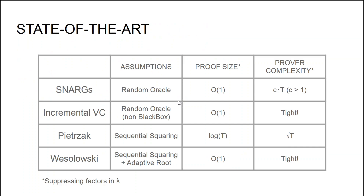I'm now going to comment on the state of the art of VDF constructions prior to our work. The first construction is a VDF from succinct non-interactive arguments, SNARK in short. Given a SNARK, one can construct a VDF that is unconditionally secure in the random oracle model with optimal proof size — constant size proof in the random oracle model. However, the prover complexity is not optimal; in particular it is some constant times t, because computing a SNARK over a sequential computation takes more time than the actual computation itself.